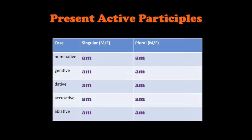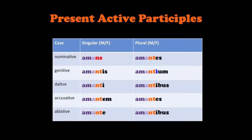Let's see what these endings look like when we use them to form an actual present active participle. Let's use the verb love: amo, amare. The root of amo is AM. Amo, amare is a first conjugation verb; therefore, the glue is A, and we have ama. If we add the masculine and feminine participle endings, we end up with: amans, amantes, amanti, amantem, amante, amantes, amantibus, amantes, amantibus.